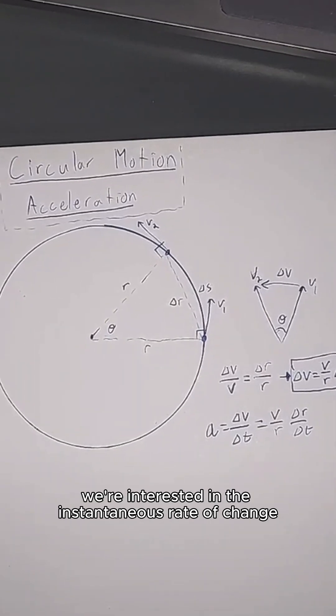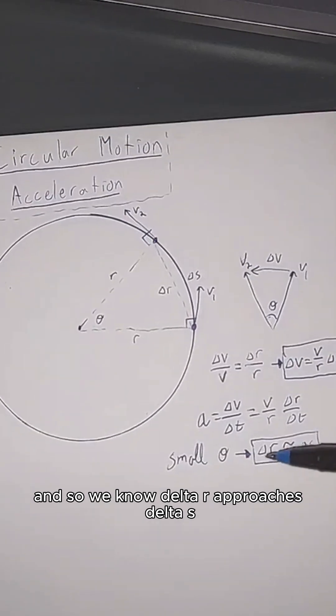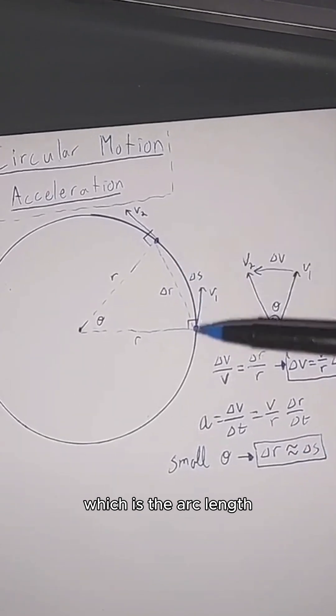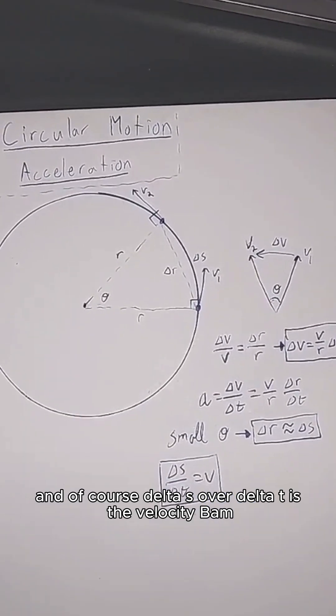Of course we're interested in the instantaneous rate of change, and so we have a small theta, and so we know delta r approaches delta s, which is the arc length. And of course delta s over delta t is the velocity.